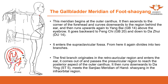One branch from the outer canthus curves down to the front of the ear, then up to the hairline, back to the ear, and curves to GB14. From GB14 it goes backward to GB20 at the back of the head. From GB20 it meets with other points — you don't need to memorize these specific points, as those are learned in acupuncture point location. You just need a general idea of where the flow goes.